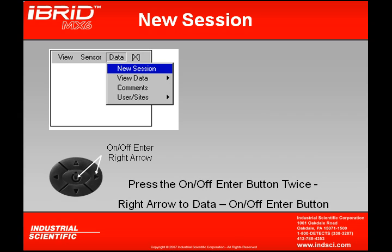To access the data logging information from the real-time operating screen, if we press the on-off enter button twice, our three drop-downs of view, sensor, and data will appear. By using our right arrow, we can go over to data, press the on-off button for the drop-down, and the first option we're going to look at is new session.